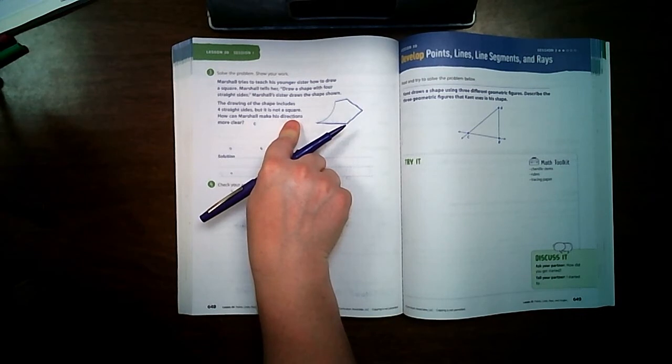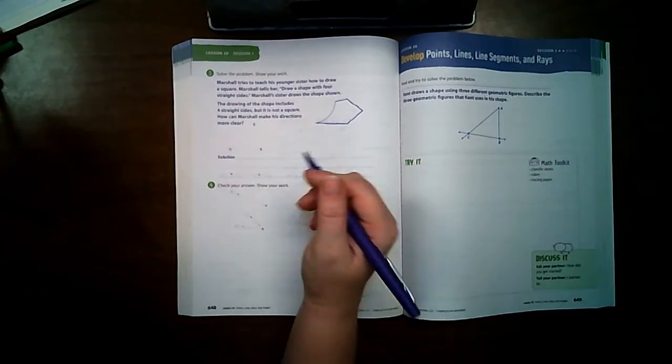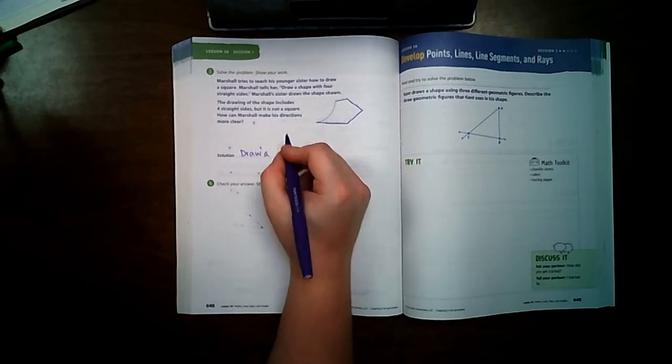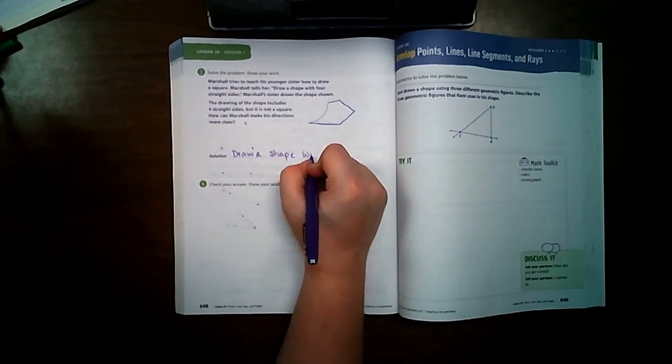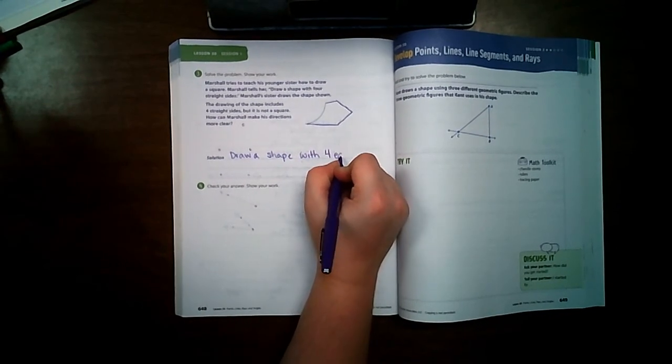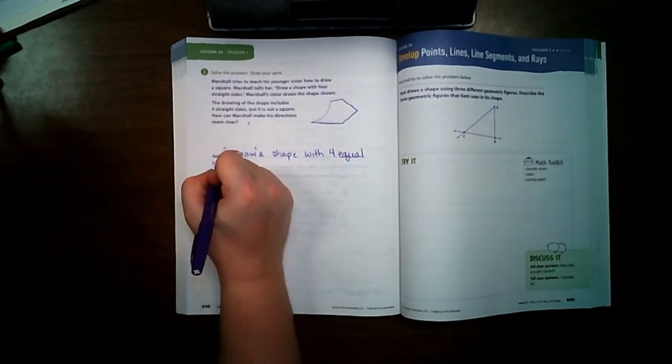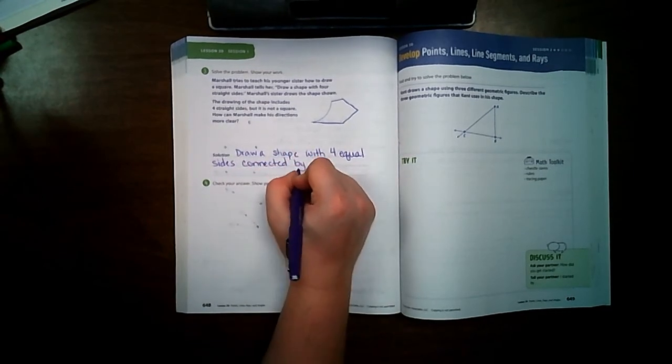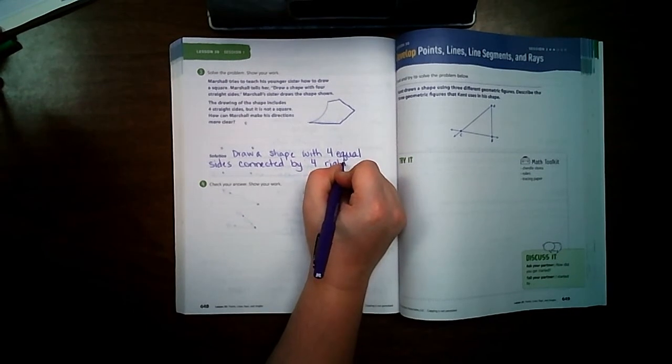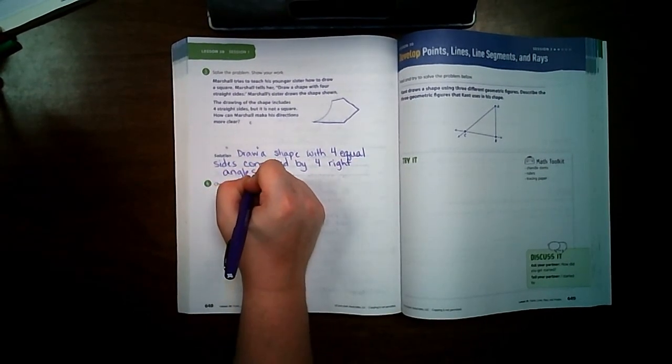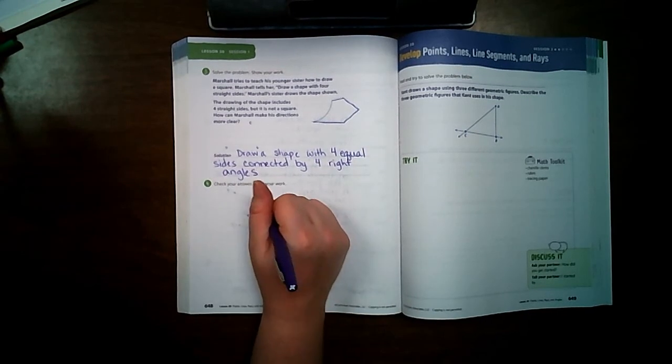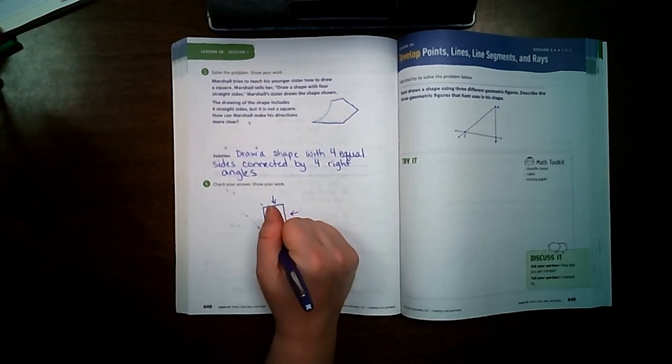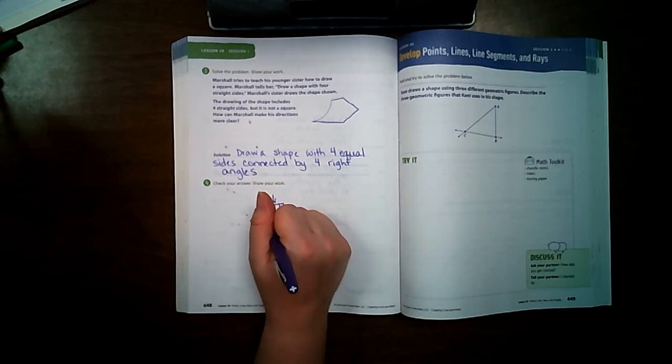Just like in the previous problem, we could talk about the right angles. We could say, draw a shape with four equal—because in a square they're equal—four equal sides connected by four right angles. Four equal sides: one, two, three, four.